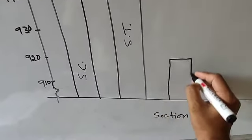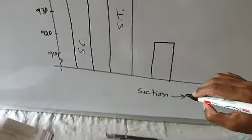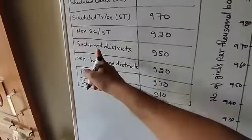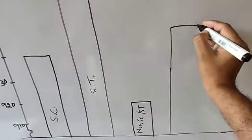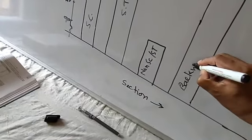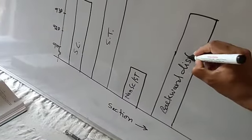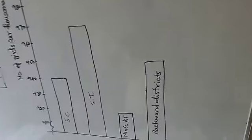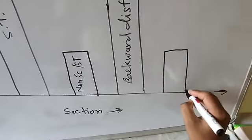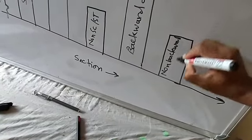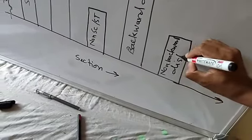For Non-SC/ST, the value is 920. Leave a space, draw the bar up to 920, and write Non-SC/ST below it. Next is Backward Districts with a value of 950. Leave a space, draw the bar up to 950, and write Backward Districts below it.